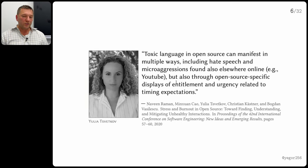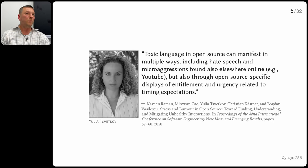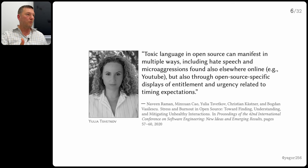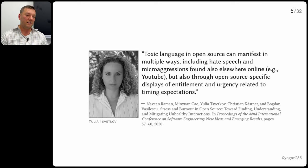Research says toxic language in open source can manifest in multiple ways: hate speech, microaggression, and open source-specific displays of entitlement and urgency related to timing expectations. This urgency means that when you're not completing some feature and people join your framework, they open a bug or feature request and start saying things like 'what the hell is wrong with you, do it now immediately, we need this feature.' They will use all kinds of language to push you forward. The research says this toxic language manifests in multiple ways, including hate speech — so be prepared.